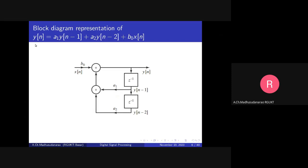Here we are implementing a specific difference equation. The equation is y(n) = b0*x(n) + A1*y(n-1). We have input x(n) and output y(n). Y(n) is delayed by one sample using z^(-1) to get y(n-1). If we need y(n-2), we delay y(n-1) by one more sample using another z^(-1) block, so cascading two delays gives us z^(-2).